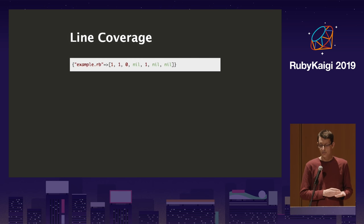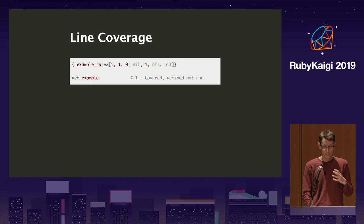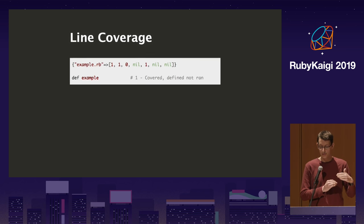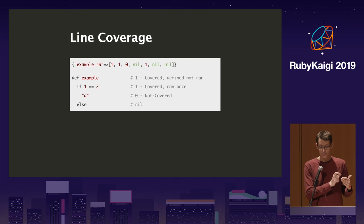All the numbers are your hit counters — how often that code was reached. Nils represent unreachable code like `end`, `else`, comments, and things you can't really reach. For example code, you might see `1, 1, 0, nil` — the method definition was executed (meaning the method was defined, not necessarily called). Then if the condition `1 == 2` is not true, you can never reach that branch, so the if was executed but the `a` was not because it's unreachable.